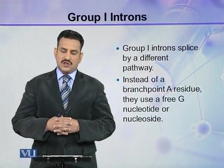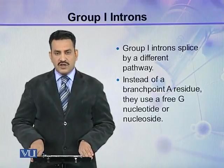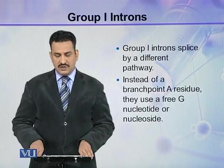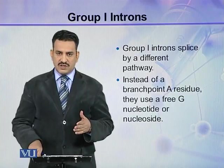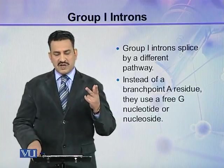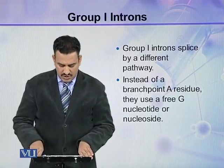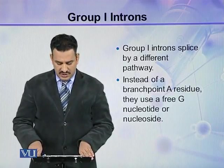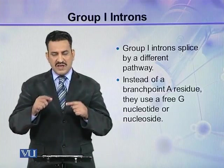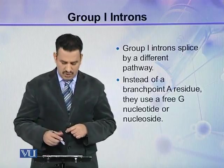Now, come to the third type of splicing, that is Group 1 introns. The Group 1 introns splice by a different pathway. As you have seen, the nuclear pre-mRNA and Group 2 introns splice in a similar way. Instead of a branch point A residue, they use a free G nucleotide or nucleoside. So, in the intron, instead of A, there will be G in the case of Group 1 introns.